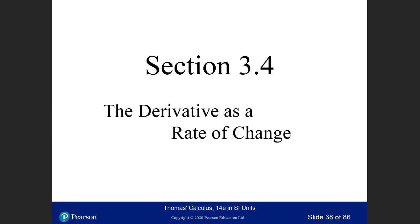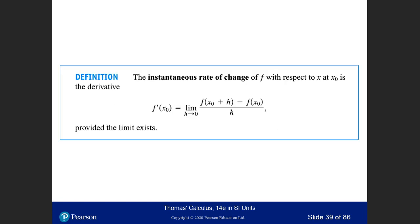Derivatives give the rate of change. If you have a function and take the difference [f(x₀+h) minus f(x₀)] divided by h, when h is not zero, that is the average rate of change of the function. When you take the limit as h goes to zero, that gives the instantaneous rate of change at x₀, provided the limit exists.